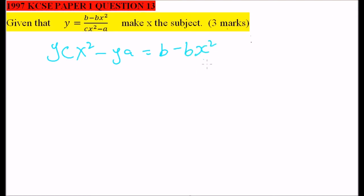So we take this bx squared to the other side. So we have x on one side and we take ya to the right side. So we have ycx squared plus, this will be,